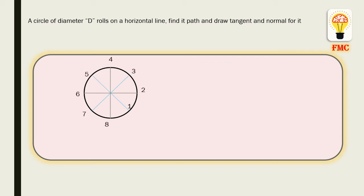Then I would give you the names: 1, 2, 3, 4, 5, 6, 7, 8. Then I am making one horizontal line where it is going to be rolled. I think you are seeing that horizontal line from here to here.